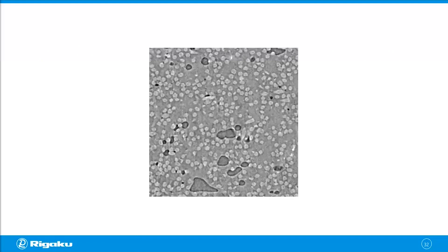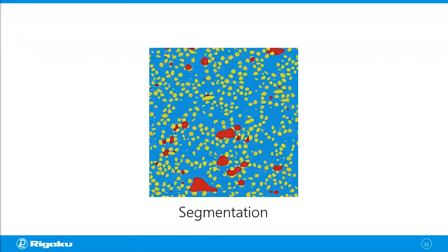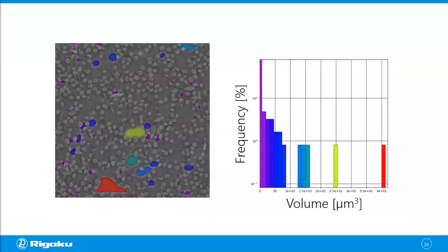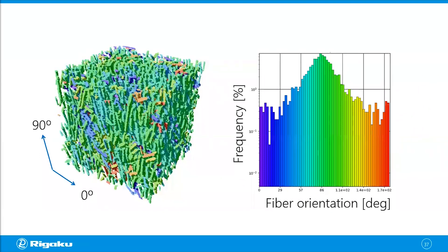Here's another example: a computed tomography cross-section of a carbon fiber reinforced polymer. The mid-level gray is from the polymer, the light gray from the fibers, and the dark gray is air — those are voids. You can segment this image into three different phases, then focus on one phase at a time. Looking at the voids — shown as red pixels — you can see different groups or clusters. You can label them as separate objects and check properties like volume, surface area, or location, and analyze them individually.